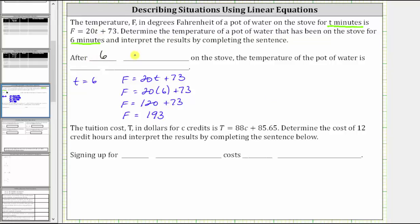And now to complete the sentence, after six minutes on the stove, the temperature of the pot of water is 193 degrees Fahrenheit.